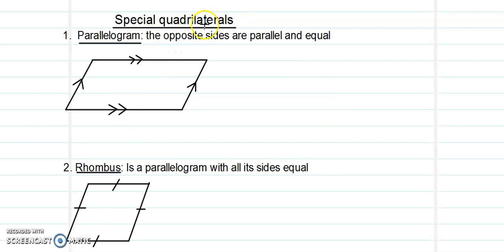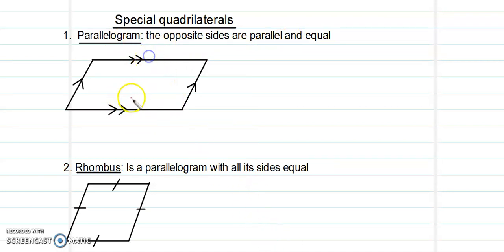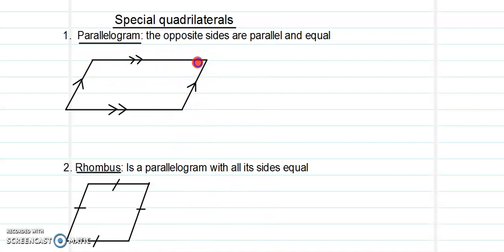We have the special quadrilaterals. First we have the parallelogram. In a parallelogram, the opposite sides are parallel — these two opposite sides are parallel and equal, and these two opposite sides are also parallel and equal. Because the opposite sides are parallel and equal, the opposite angles are also equal: the angle here is equal to the angle here, and this angle is equal to this angle.